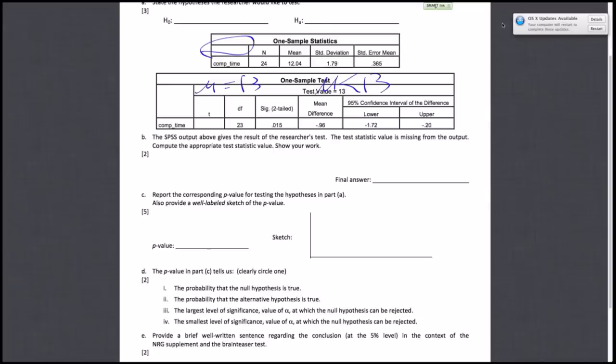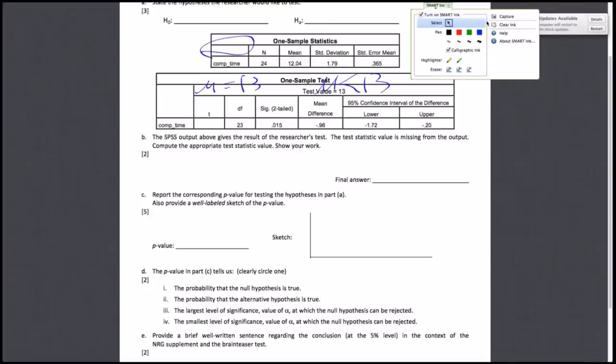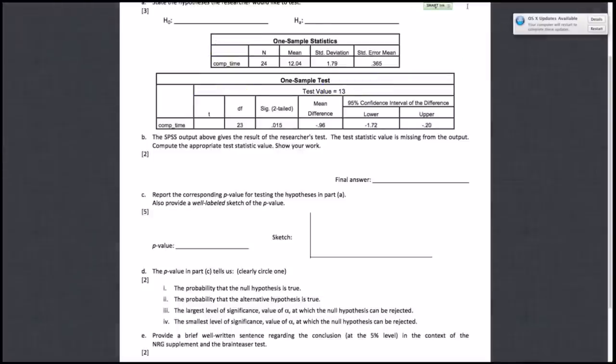Moving on to part B. The SPSS output gives the result of the researcher's test, but the test statistic value is missing. Compute the appropriate test statistic value and show your work. We'll do a t-test here. Recall that the formula for a t-test is mu hat minus mu naught over the standard error.